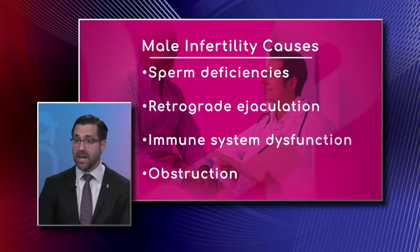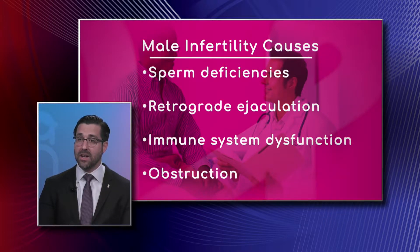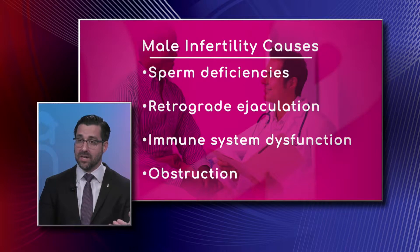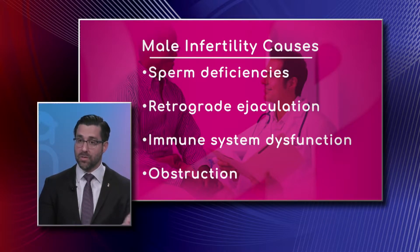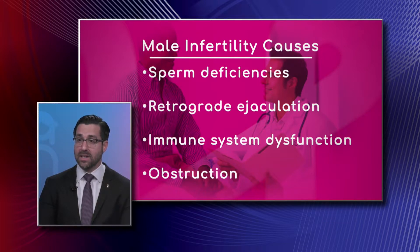Retrograde ejaculation will be another one. This is when a man is not able to ejaculate the sperm into the woman's vagina for them to swim up to the egg. If that can't happen, you will not be able to have a pregnancy, so retrograde ejaculation is another cause.